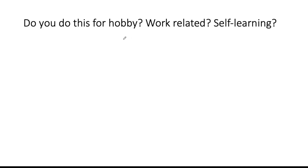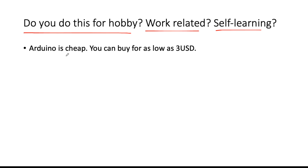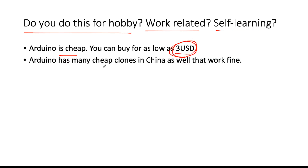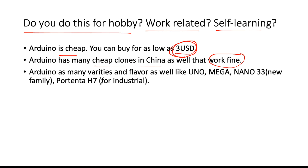Last on our list is cost. A few things to consider: Is this for a hobby, work, or self-learning? The Raspberry Pi and Arduino differ in price. An Arduino is cheap — you can buy one for as low as 3 USD — and there are many compatible clones from China that work just fine. Arduino also has many varieties such as Uno, Mega, Nano, the newer R3 family, and the Portenta H7 marketed for industrial applications.